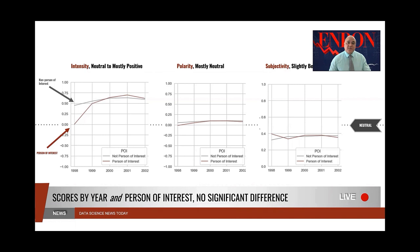Here we see two trend lines, one for persons of interest and the other for non-persons of interest. To the left we have intensity, to the middle we have polarity, and to the right, subjectivity. Intensity and polarity are both emotion-based. The more words that are used that are emotional, the higher their scores. Subjectivity is opinion-based. The more words that are used that are opinionated, the higher its score. So here we have intensity, and we see that both groups, persons of interest and non-persons of interest, are about the same, mostly positive. For polarity, both groups are again about the same, mostly neutral. And for subjectivity, both groups are again about the same, just slightly below neutral.